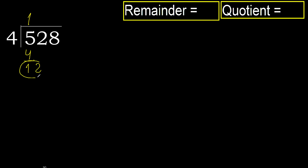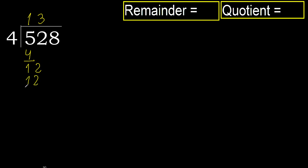Next, 12. 4 multiplied by 4 is 16, it is greater. Multiply by 3 is 12, it is not greater. Subtract.